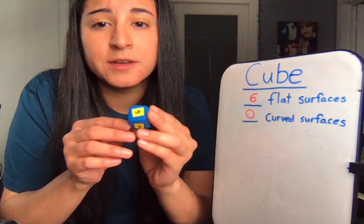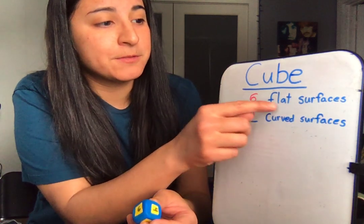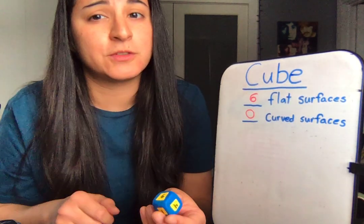A cube is a 3D shape with six flat surfaces and zero curved surfaces.